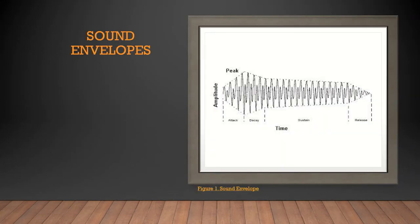So first, what is a sound envelope? Donald Hodges defines sound envelopes as changes that occur over the course of a single sound. These changes include an attack, decay, sustain, and release.